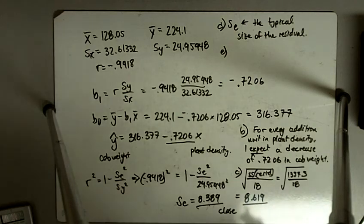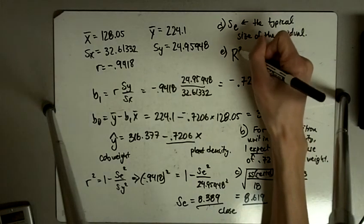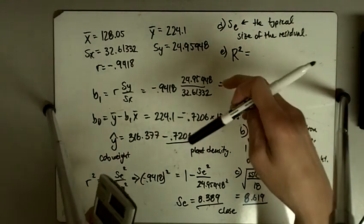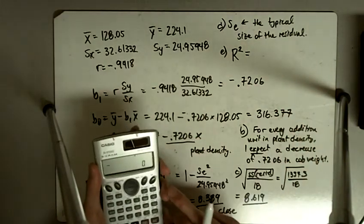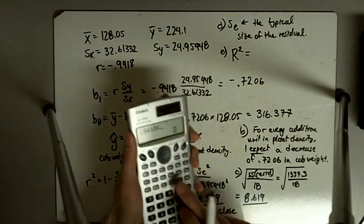Okay. In E it says, what proportion of the variation in cob weight is explained by the linear relationship between cob weight and density? So that is asking for r squared. R squared is the proportion of the variation in one variable that's explained by the other variables. So I'm just going to take 0.9418 squared.